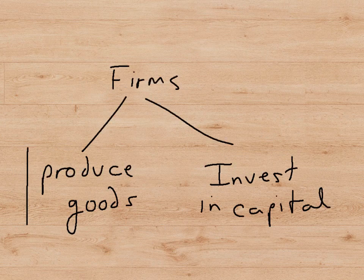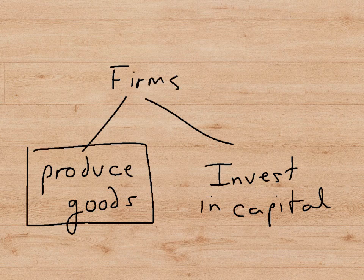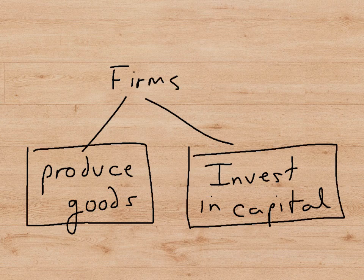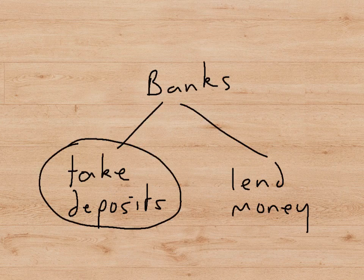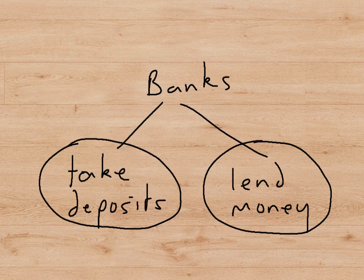Firms produce goods in the economy and they also do what's called investment spending, which means spending money on capital equipment such as machinery, factories, etc. Banks take deposits from people who want to put money into the bank and then lend this money to borrowers.